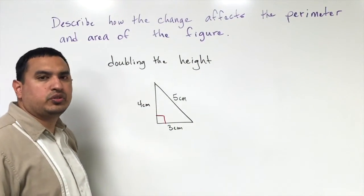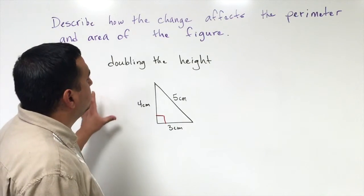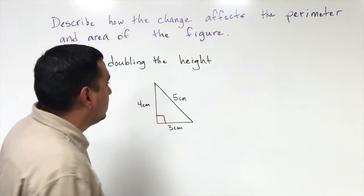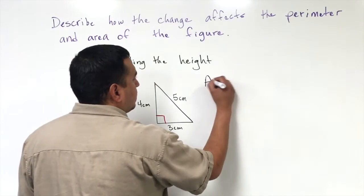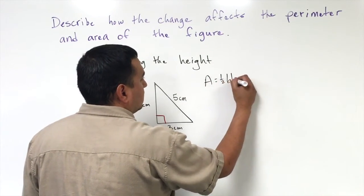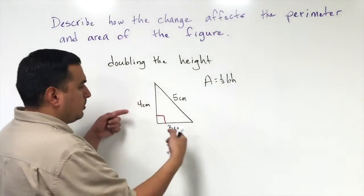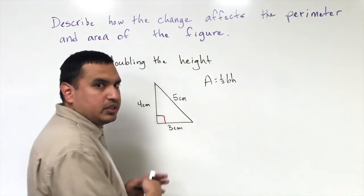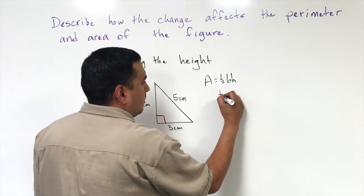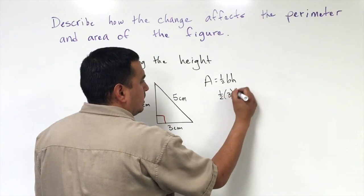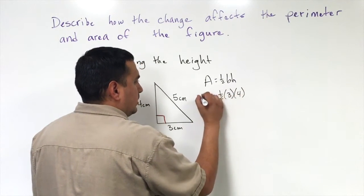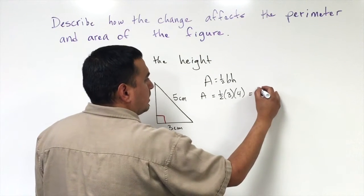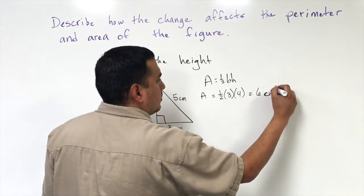Now let's look at what happens to the area of this shape after we double the height. Remember that the area of a triangle is one-half base times height, and the base and the height are always perpendicular to each other. So it's going to be one-half of 3 times 4, which gives us our original area of 6 centimeters squared.